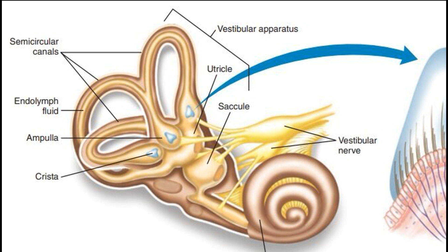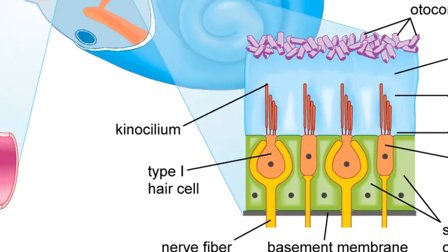While the semi-circular canals detect rotational movements, the utricle and saccule are responsible for sensing linear acceleration, such as the feeling of moving forward in a car or going up in an elevator. These otolith organs contain a gelatinous membrane embedded with tiny calcium carbonate crystals called otoconia. When we accelerate linearly, the otoconia, due to their inertia, lag behind, causing the gelatinous membrane to shift. This shift bends the hair cells beneath the membrane, generating electrical signals sent to the brain to determine the direction and magnitude of linear acceleration.